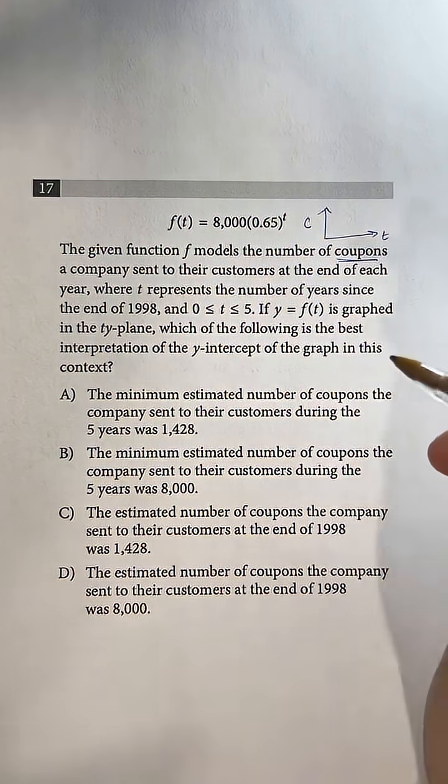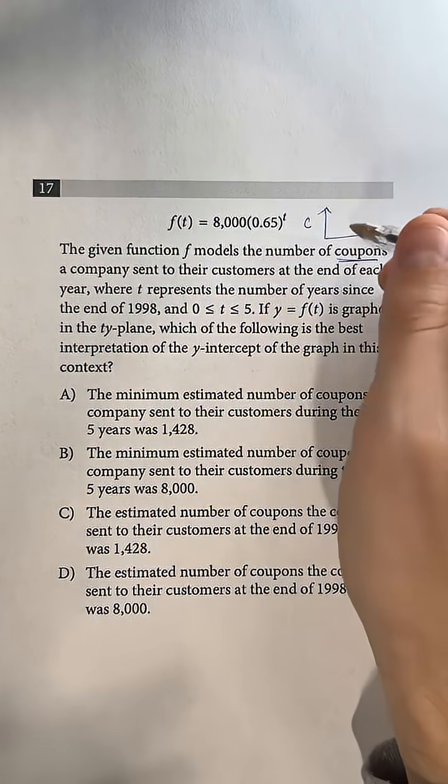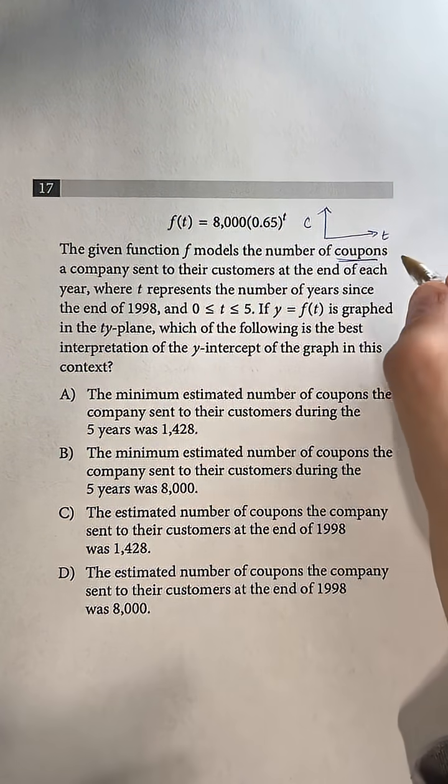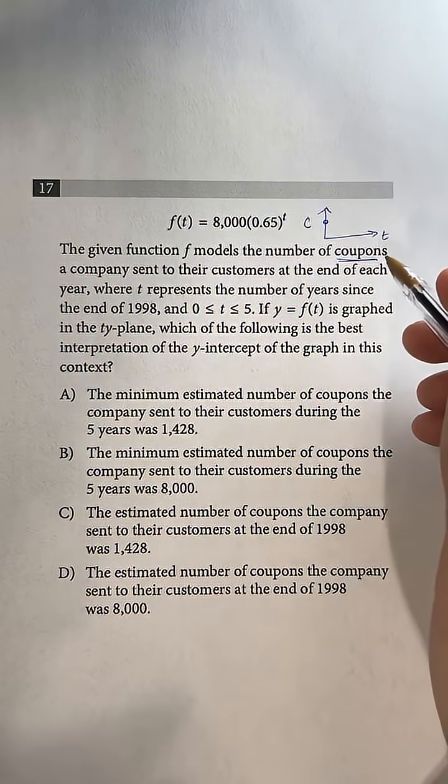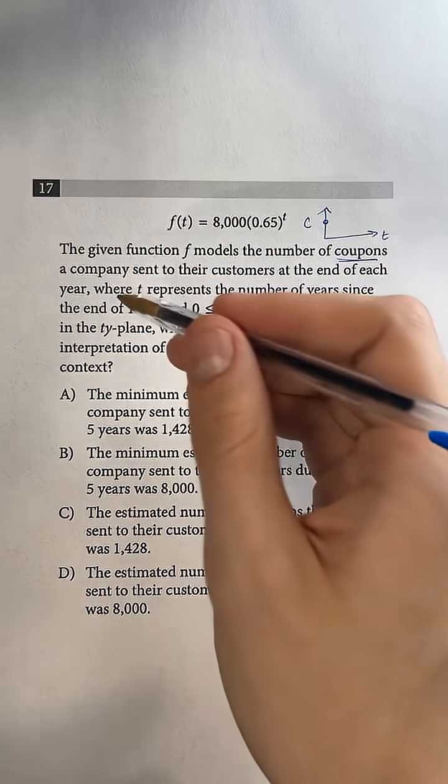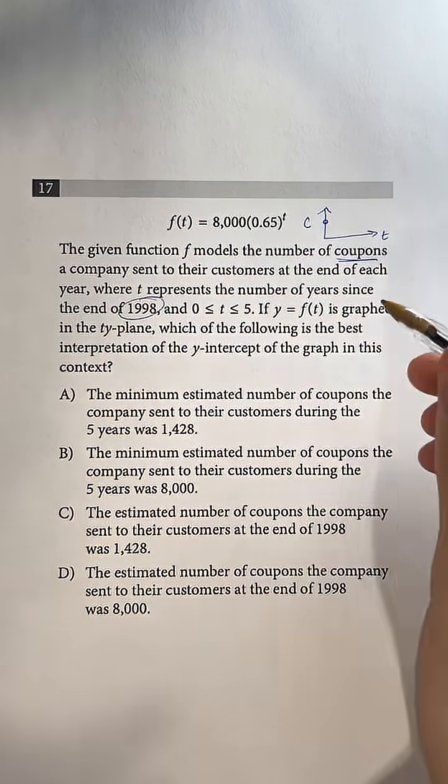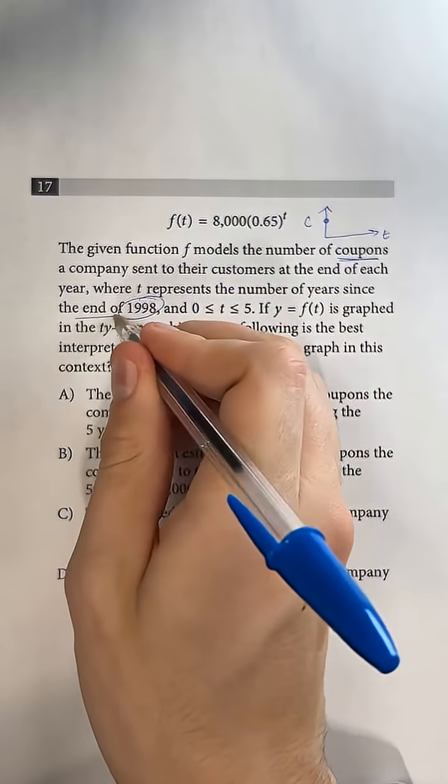Remember the y-intercept is when we're at x equals 0, so in this case essentially t equals 0, so we're going to be somewhere over here, and the first thing that we know is that that is going to be 1998, or specifically the end of 1998.